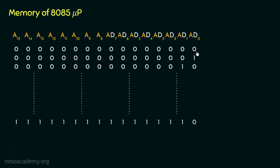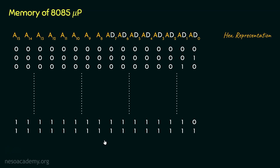It will start from 16 zeros and finally we will have 16 ones. Remembering all these sequences in binary is a bit tough for us humans, and that is where hexadecimal representation will come to the rescue. We already know how to convert a binary number into hexadecimal — all we have to do is group the binary sequences from the least significant bit to the most significant bit as a 4-bit chunk, giving us 4 different nibbles.